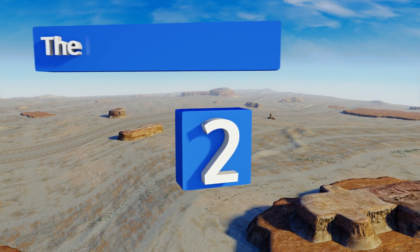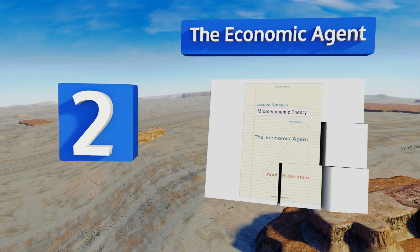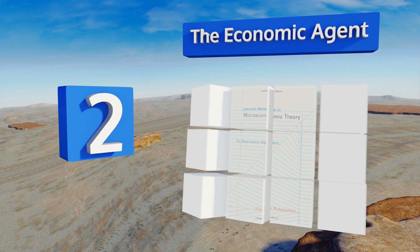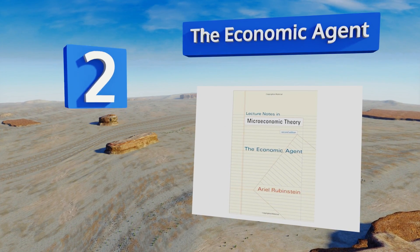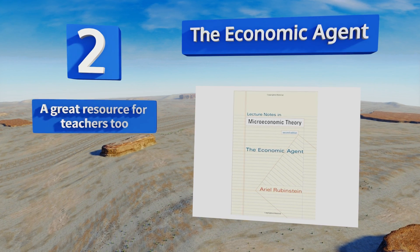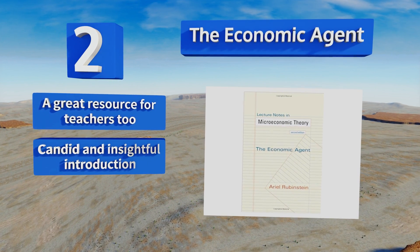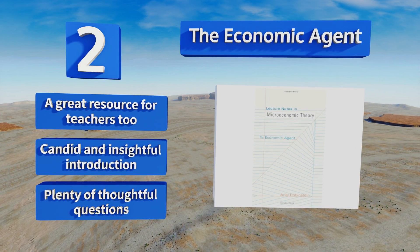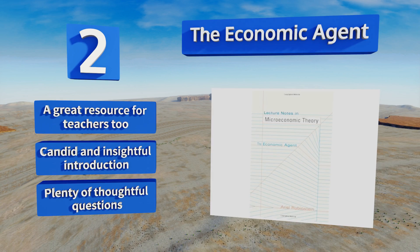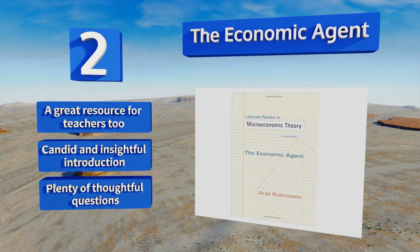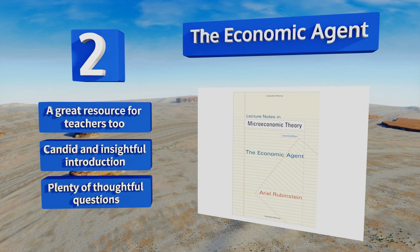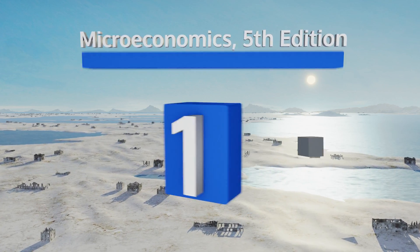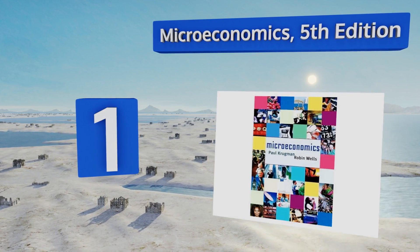At number two, developed over the course of 15 years by Professor Ariel Rubinstein, The Economic Agent presents his lectures in a concise 168 pages. This engaging text serves as a superb supplement for students who need additional elucidation or want access to his brilliant assessments. It's a great resource for teachers too and contains a candid and insightful introduction along with plenty of thoughtful questions.